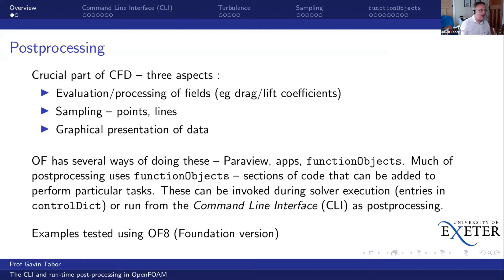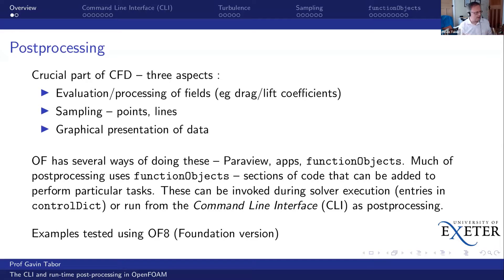Then there's the aspect of sampling the data — extracting information from the simulation. That's typically flow conditions at a point or multiple points, or across lines in the flow, which might match readings we've got experimentally for validation. And finally there's the obvious picture side: the graphical presentation — iso surfaces, vector streamlines, and things like that.